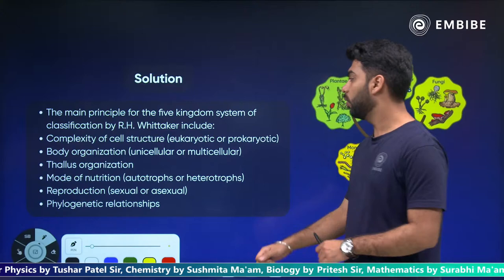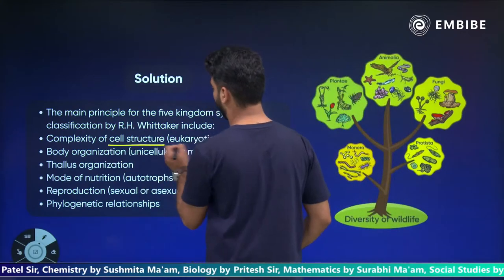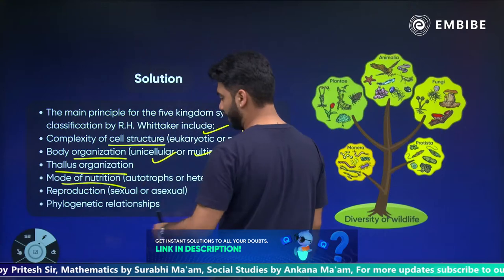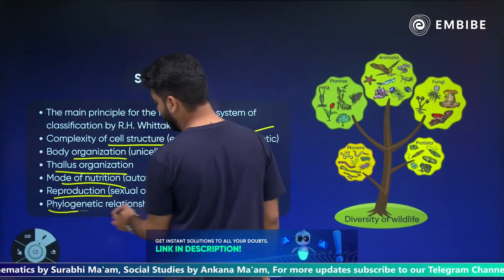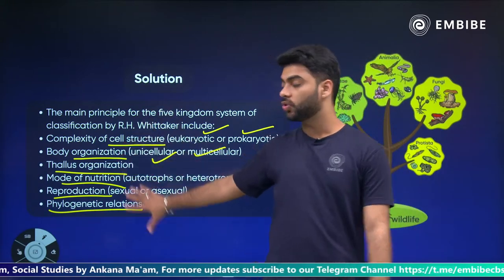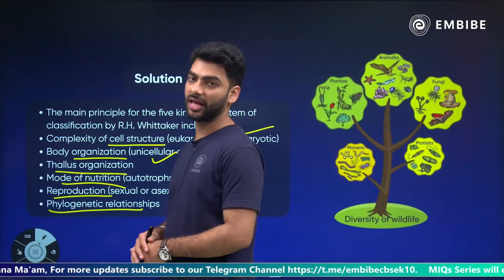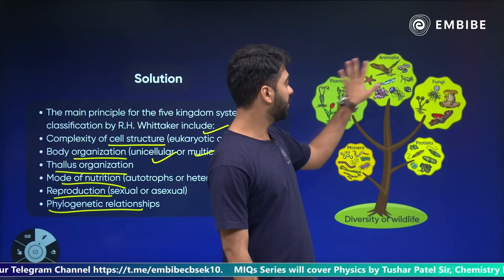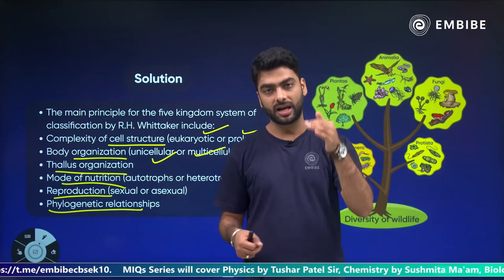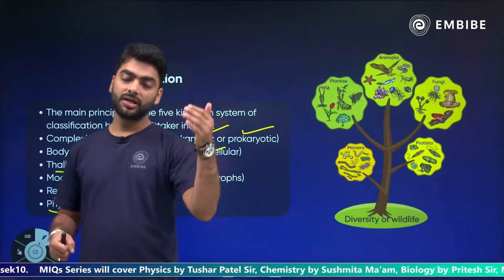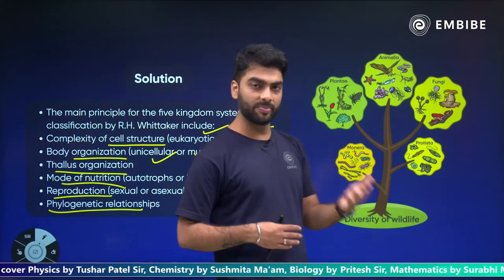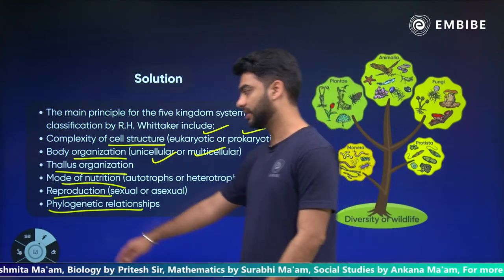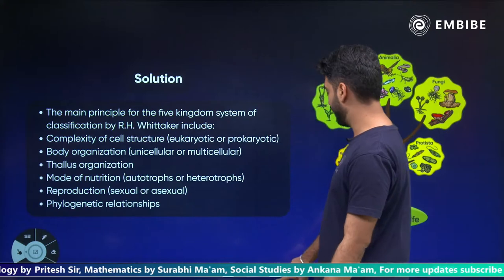He chose: complexity of cell structure (whether eukaryotic or prokaryotic), body organization (unicellular or multicellular), thallus organization, autotrophic or heterotrophic nutrition, asexual or sexual reproduction, and phylogenetic relationships. He chose all the different characteristics when he divided the organisms into five kingdoms: Monera, Protista, Fungi, Plantae, and Animalia.